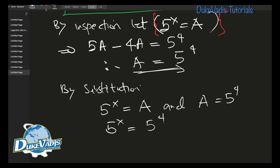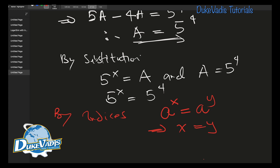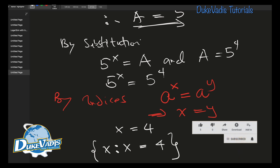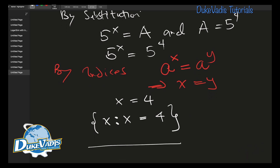Please remember that by indices, one of the properties states that if a raised to the power x equals a raised to the power y, then x equals y. So we can say boldly that our value x is equal to 4. Confidently, the truth set of the equation is such that x is equal to 4. That is the truth set of the equation — as simple as that.